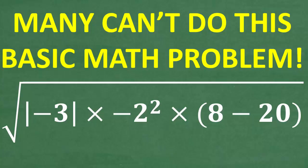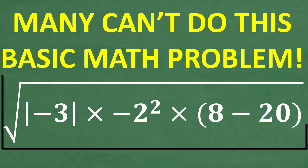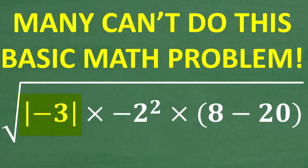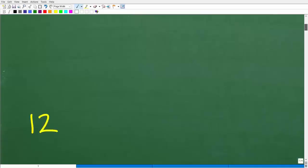So let's go ahead and review the problem. We're not going to be using our calculators. What we have here is the square root of a numeric expression. This is the absolute value of negative 3 times negative 2 squared times parentheses 8 minus 20 in parentheses. The objective is to get this down to one answer. Let's go ahead and take a look at the answer right now — the answer is 12.